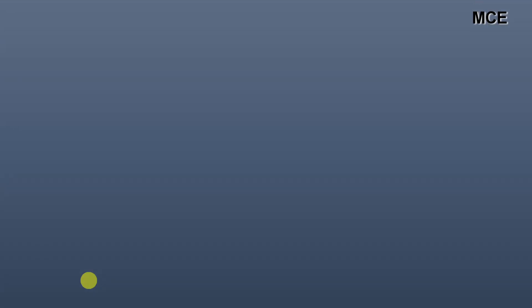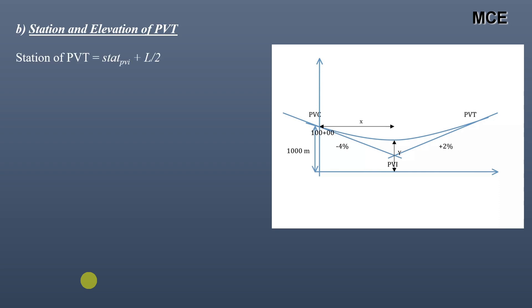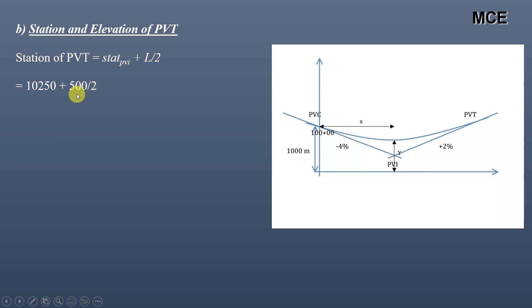Next, we find the station and elevation of PVT, the point of vertical tangency. The station of PVT equals the station of PVI plus L/2. The station of PVI is 10,250 meters and L is 500 meters, so the station of PVT equals 10,500 meters, or in stations: 105+00.